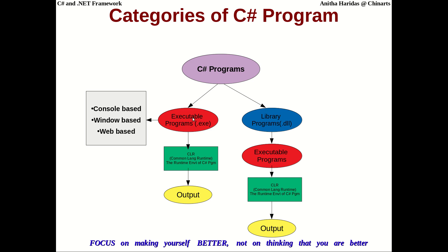All executable programs are given to the Common Language Runtime (CLR), which is the runtime environment of C#, and it produces the output. If you have a library program with extension .dll, it can be added as a component to any executable program. The .dll is added to the executable, which is then given to the CLR for execution to produce the output. This is how a C# program is designed for execution.